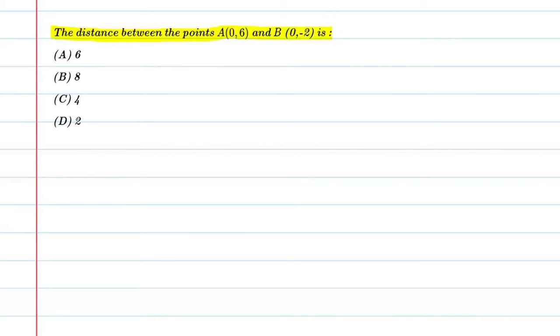In this question, we will find the distance between these two coordinates. Let's start. First, we'll write given. Given points: the first point is A(0,6) and the second point is B(0,-2). These are the points.